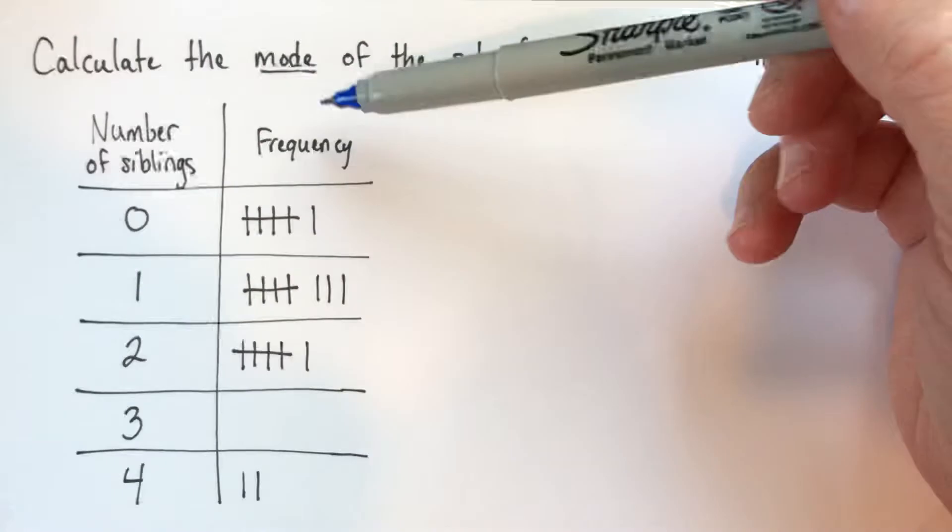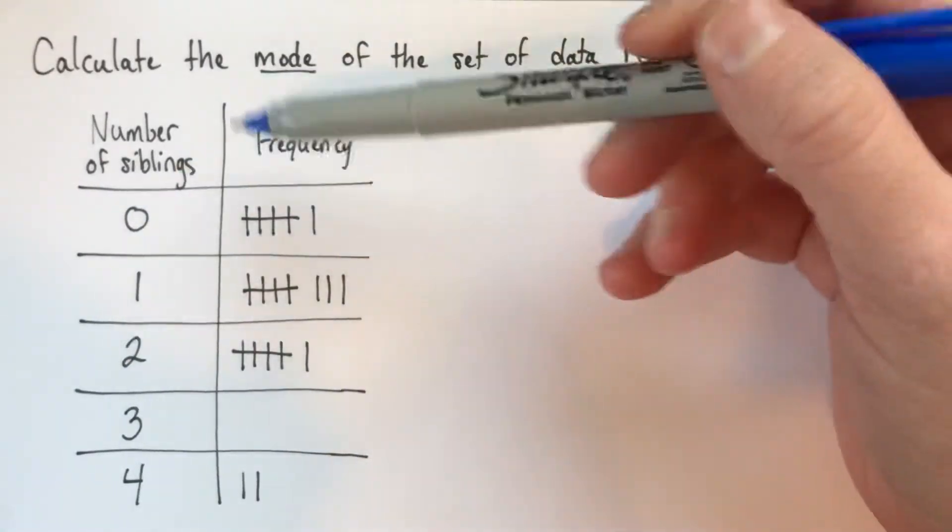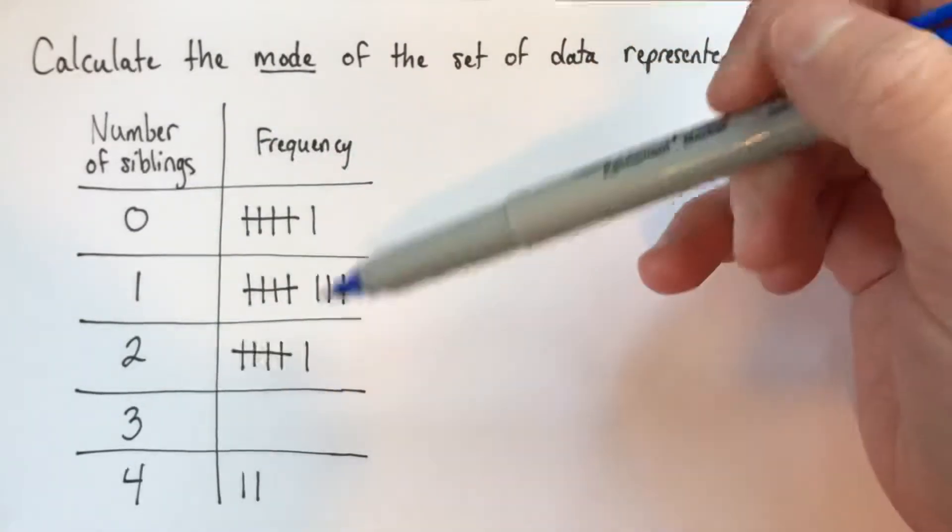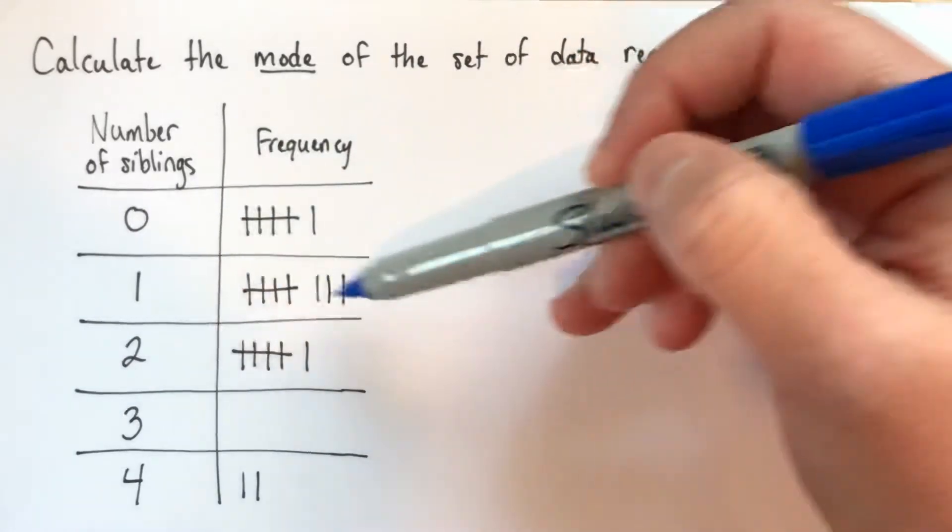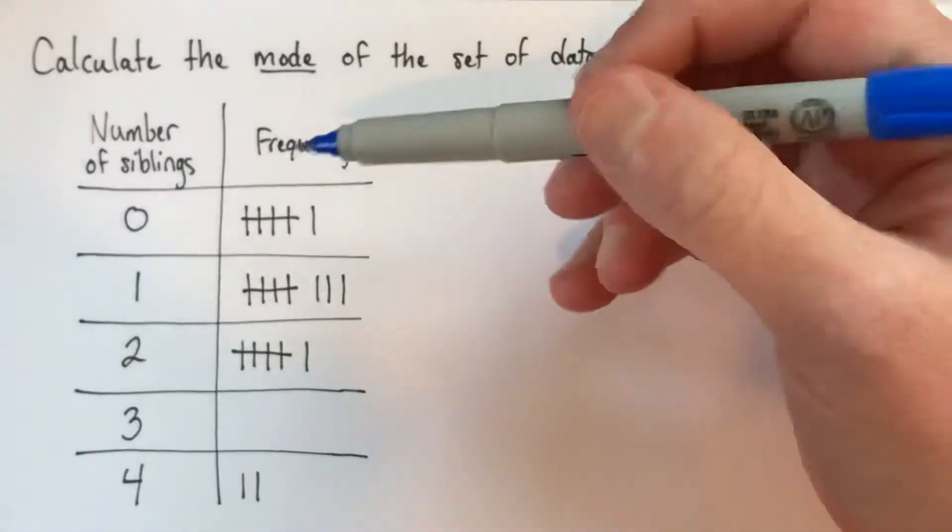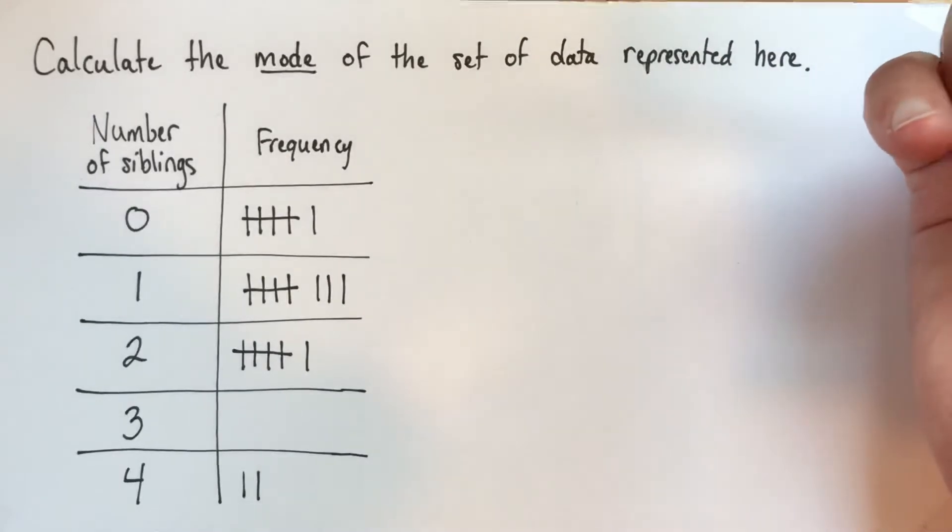We have to be really careful when using this kind of representation of data. If you ask 22 people how many siblings they have and write it down, you'll have a big jumble of numbers, so it's really useful to organize it like this. But if we're going to find the mode from this table, we really need to think hard about what it means.